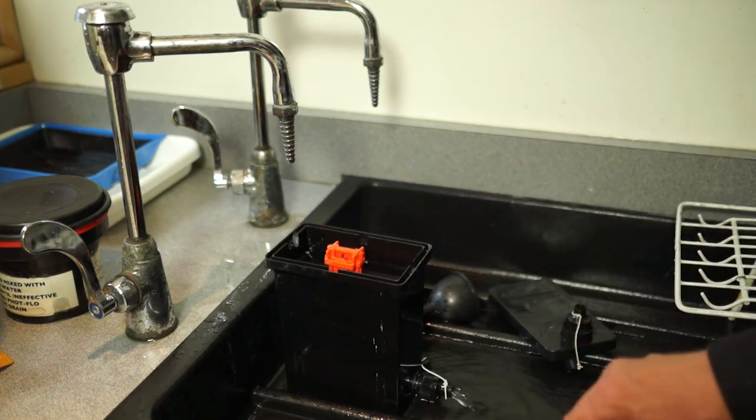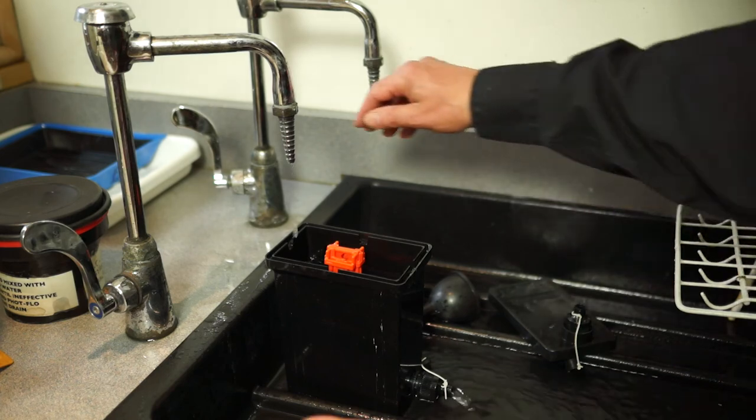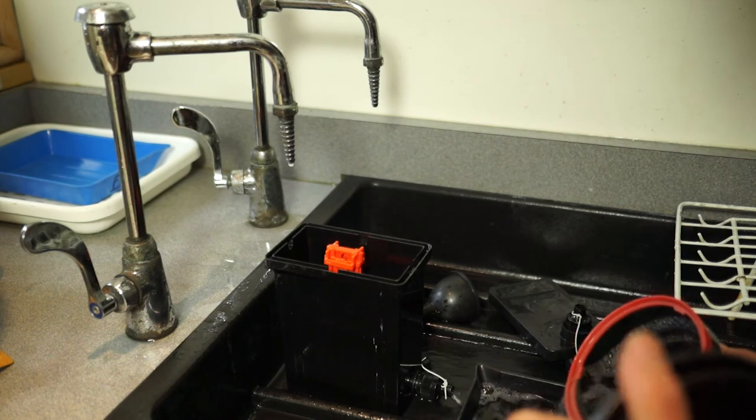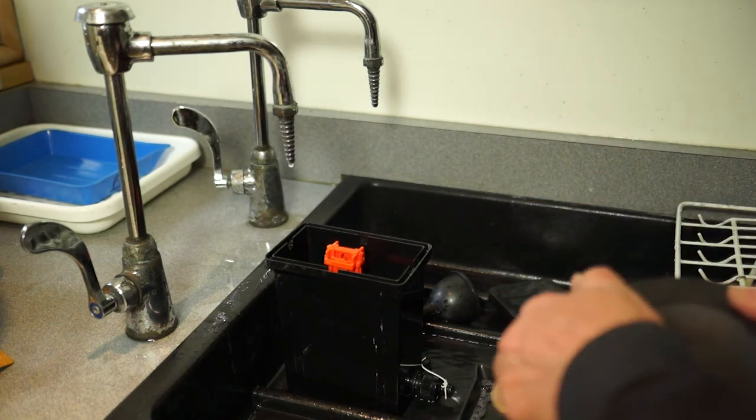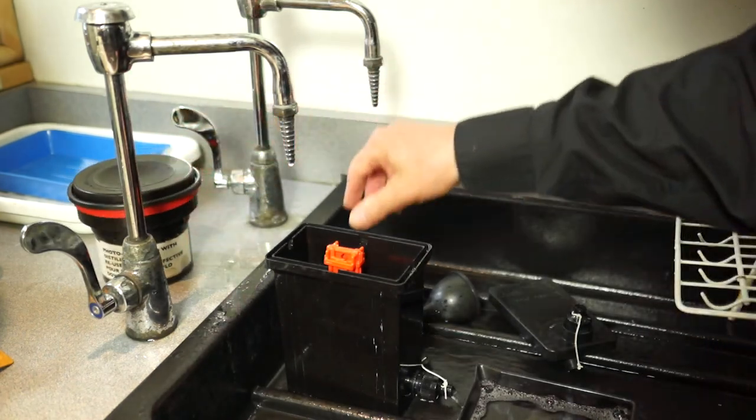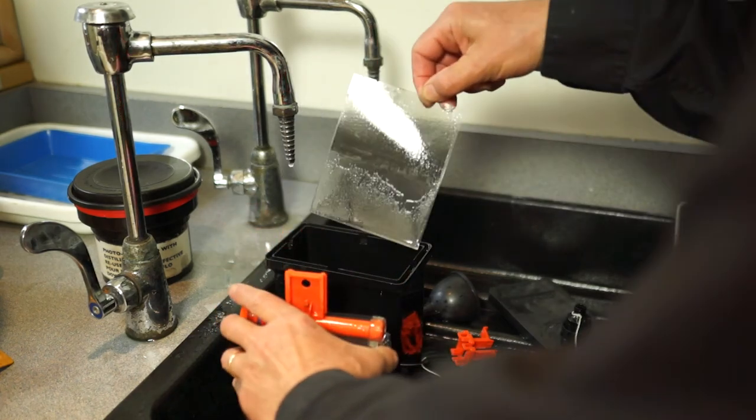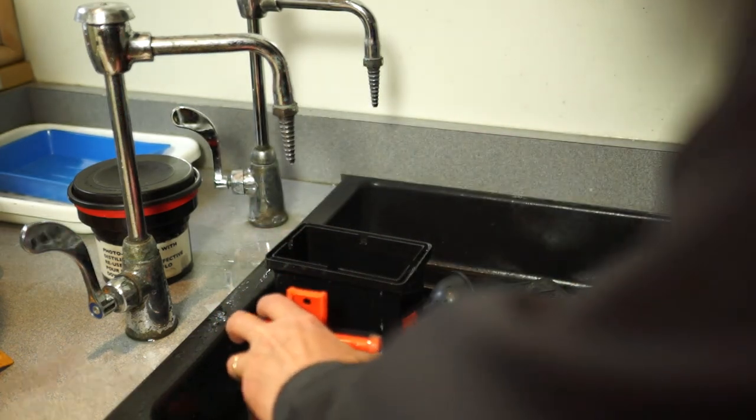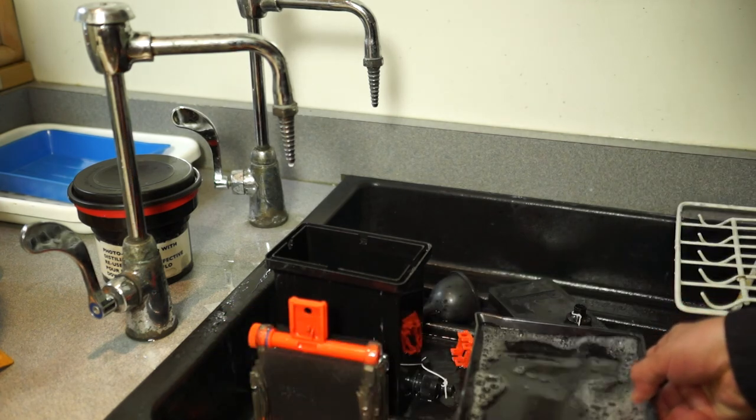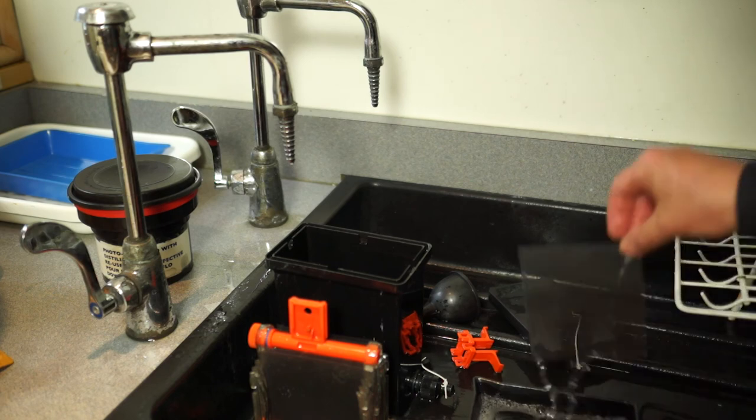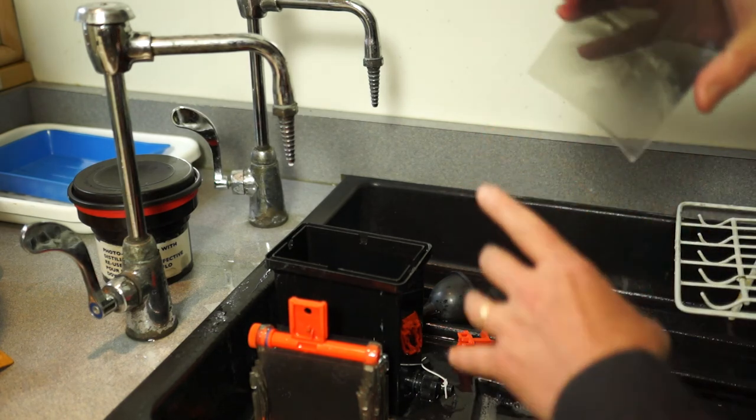Next we'll want to do our photo flow and we can just take a small tray, pour out our photo flow from our tank, and pour that into the tray. Then just do one sheet at a time, pulling it out of here and agitating it for a couple seconds in the photo flow. Then pull it out and make sure that there's no foam sticking to it.